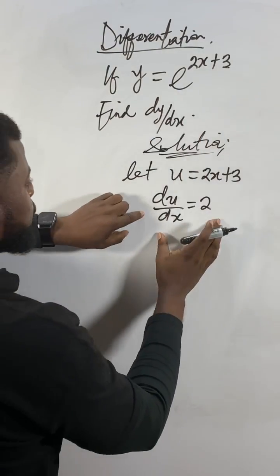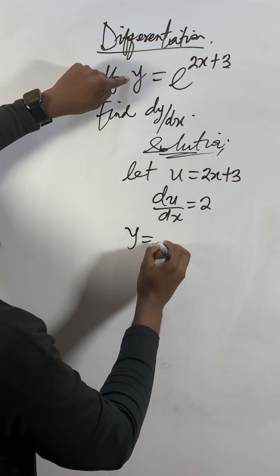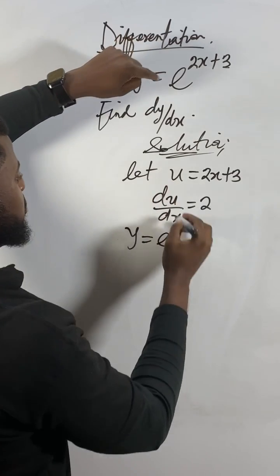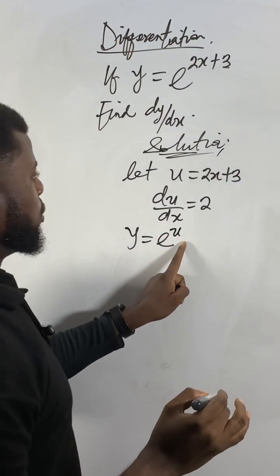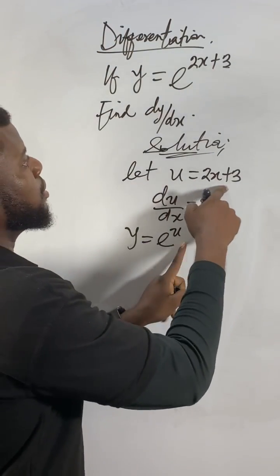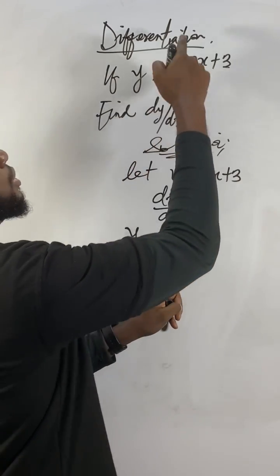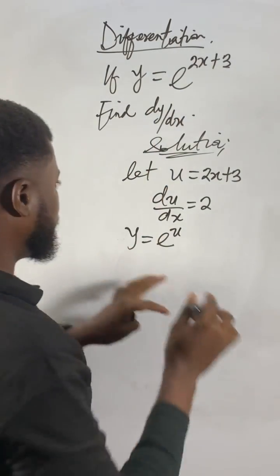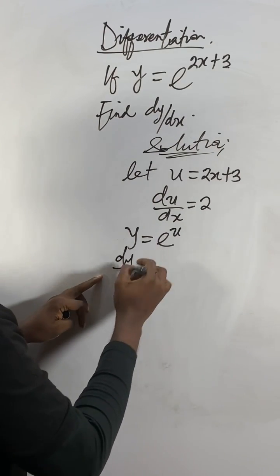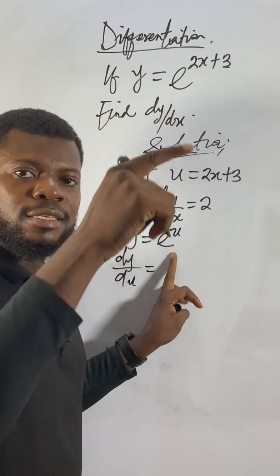Now remember: y is an exponential function. Since we said let u equal 2x plus 3, we can represent y in terms of u. So the original function becomes y equal to e to the power of u. Now I'll take the derivative of y with respect to u — dy over du — where y equals e^u.